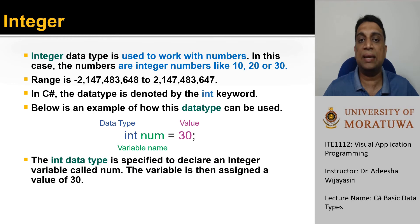And then you can assign an integer value to the variable. Then the compiler knows that a variable called num holds an integer value and in this case the assigned value is 30.